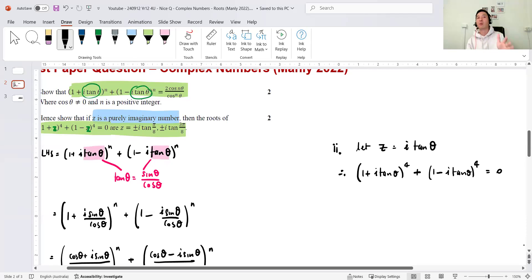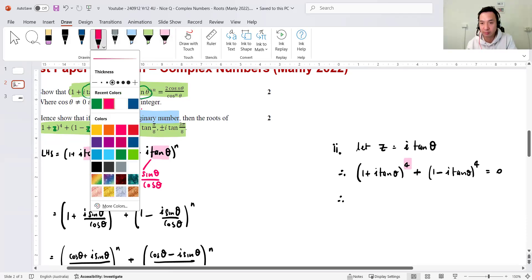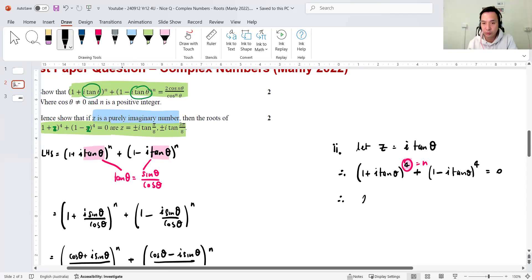Now, when that happens, I'm going to sub i tan into the equation. Therefore, 1 plus i tan to the power of 4 plus 1 minus i tan to the power of 4 equals 0. And then using part 1, right? Using part 1, I'm going to replace, therefore, replace the n with 4. That's all I replace, to be honest. So, then I go, therefore, 2 cos 4 theta, right? Because it's n theta, 4 theta over cos to the power of 4 theta equals 0. Then I solve this, right? Cos to the power 4 goes away, right? So, that essentially disappears. The 2 also disappears. And I have cos 4 theta equal to 0, right?